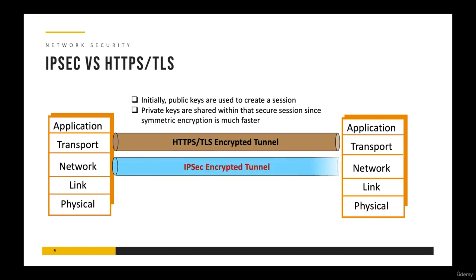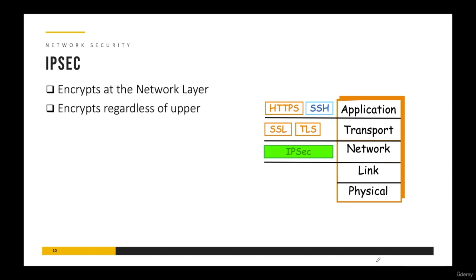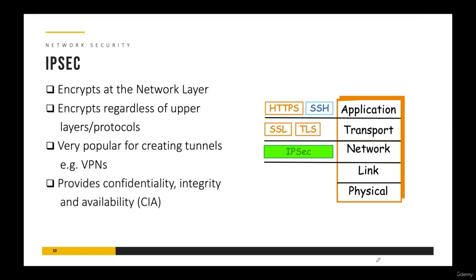In contrast, the IPSec protocol works at the network layer. It encrypts at the network layer and can use both public and private keys. As a network layer solution, IPSec encrypts regardless of the upper layers — so even if you're encrypting data using HTTPS/TLS, if you're also using IPSec it's going to encrypt that whole thing once again. It works independently of the upper layers. IPSec is very popular for creating tunnels and one of its biggest uses is in VPNs, or virtual private networks. IPSec provides CIA: confidentiality, integrity, and availability.